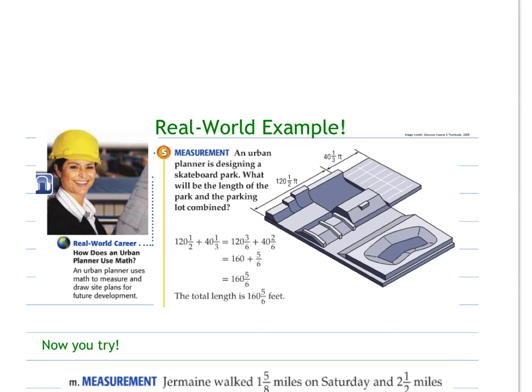A couple word problems for you, and then you are on your way. This one's already worked out for us. This is an urban planner, and they're designing a skateboard park. So they're wondering what the length of the park and the parking lot combined would be. So they have the length of the parking lot and the length of the park. If they're wondering combined, that would mean they were adding. They didn't have common denominators, so they changed them to have a common denominator of 6. Then they added the whole numbers together, added the numerators together. So the total length of the park and the parking lot was 160 and 5 sixths feet.